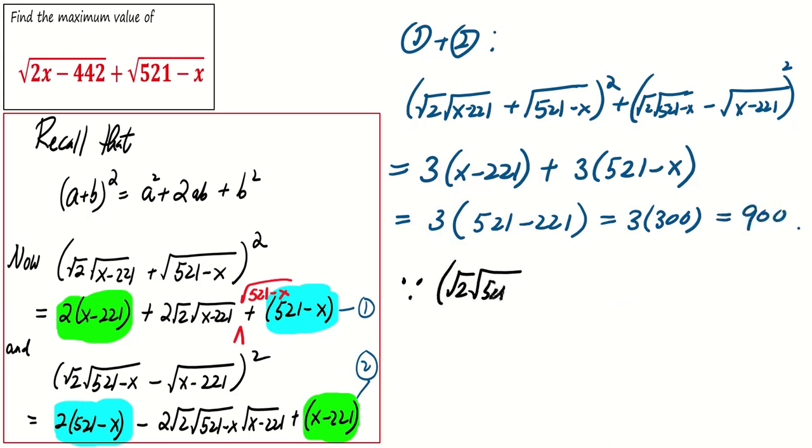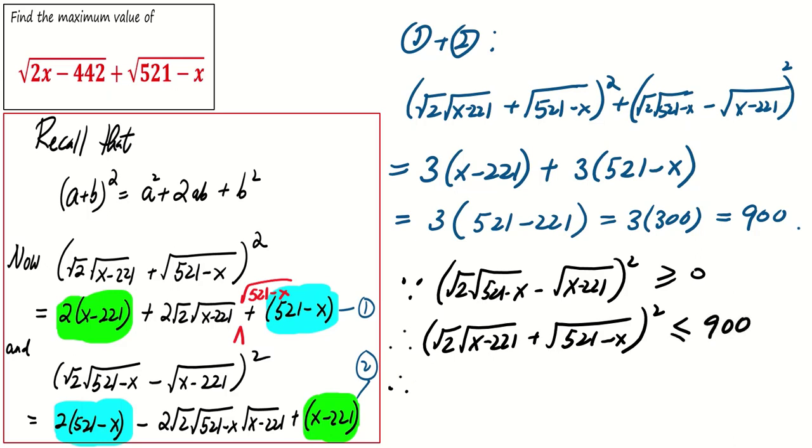Remember, the square root of any real number is always at least 0. With this in mind, we deduce that the square of square root 2 square root of x minus 221 plus square root of 521 minus x cannot exceed 900. This, in turn, means that the expression square root of 2x minus 442 plus square root of 521 minus x is not more than 30.